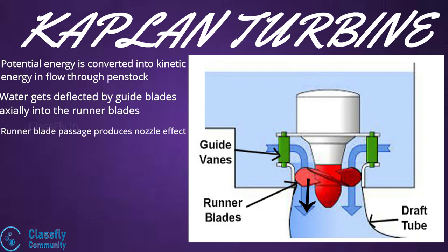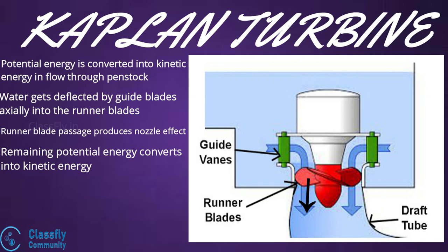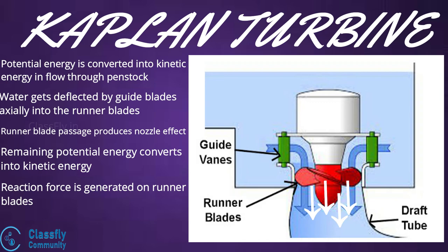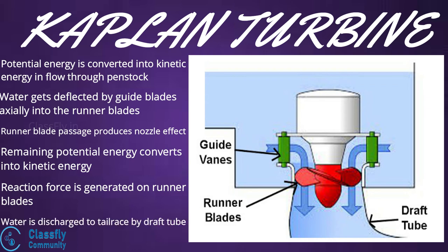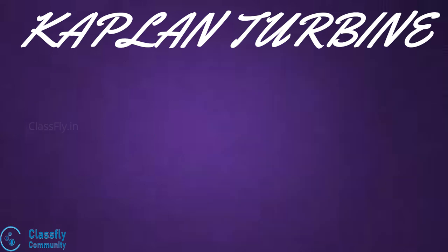The remaining part of the potential energy is also converted into kinetic energy. The water leaves the runner blades at very high velocity, and as a result, a reaction force is set up causing the runner to rotate at high speeds. The coupled shaft also rotates at high speed and can be used to generate electricity. The discharged water then enters the draft tube and is let off to the tail race.